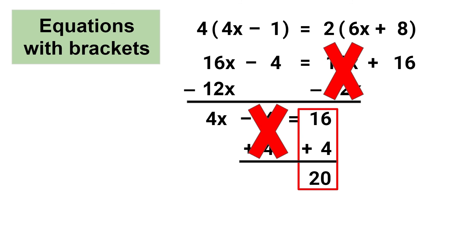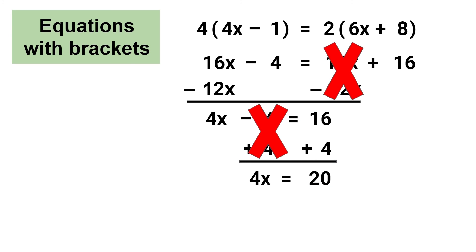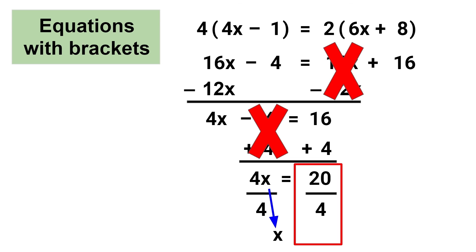Now we have the equation 4x equals 20. To isolate the variable x I'll need to remove the coefficient 4. To remove terms we need to use the opposite operation — 4 is being multiplied by x, and the opposite of multiplication is division. So to remove 4 on the left side I need to divide by 4 on the left side, and that means I also need to divide by 4 on the other side. On the left side, 4x divided by 4 equals x, and on the right side, 20 divided by 4 equals 5. So x is equal to 5.